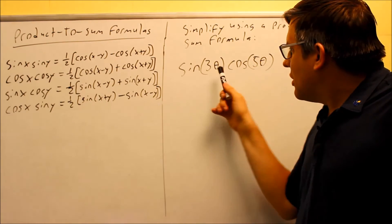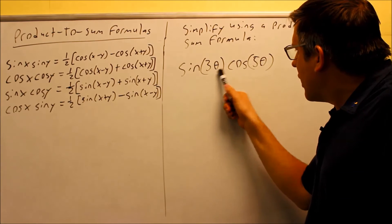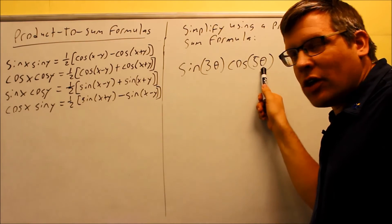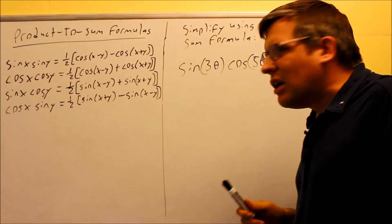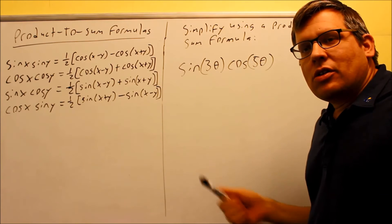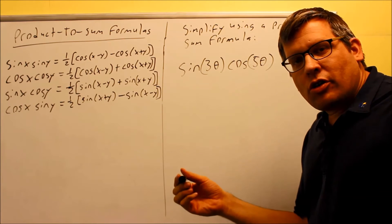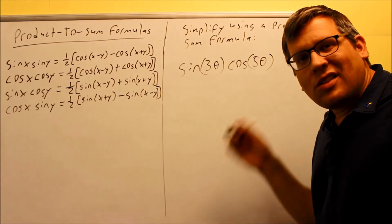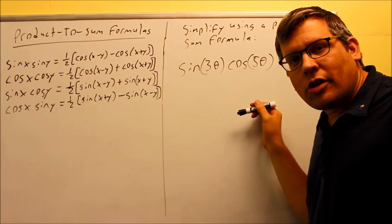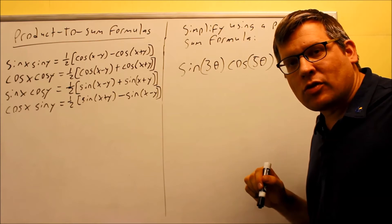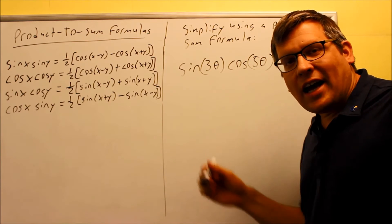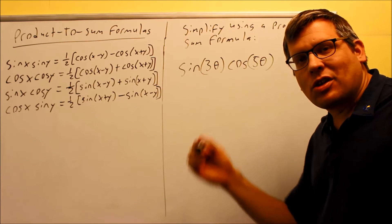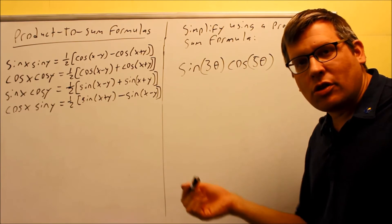However, when you do this, what happens is the x is 3 theta and the y would be 5 theta. And so, in this part of the formula, you get a negative angle. Now, typically, when you see your answers written in the book or if you use an online homework grading system, they don't want negative angles as part of your answer. So, you want to try and avoid negative angles if you can. And so, in the notes, I had to use one of those even-odd properties to get rid of the negative angle and turn it into a positive.